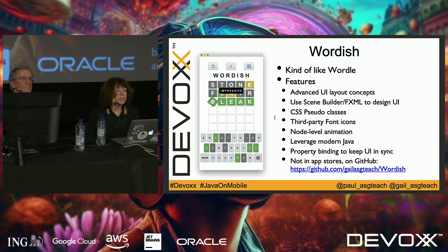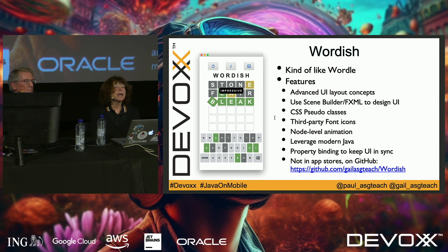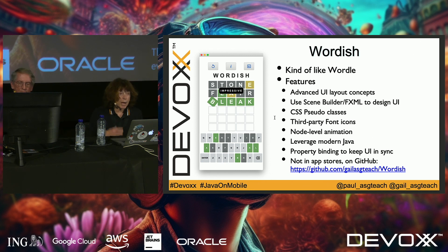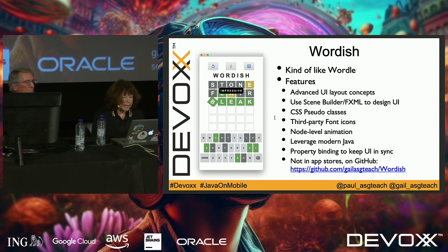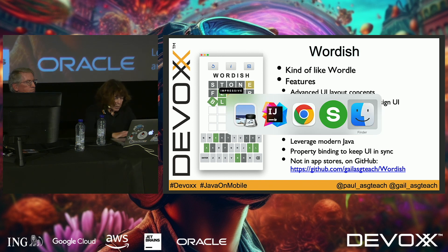The second demo is Wordish, based on the New York Times game Wordle, as Paul said. It's more of a demo and not in the app stores — it doesn't persist your games. I was struck playing Wordle myself: this would be perfect for a JavaFX game. It's simple, uses high-level animation, has great opportunities for CSS styling, and we use the Iconly font library — a third-party font library for nice buttons and controls. The source code is on GitHub.